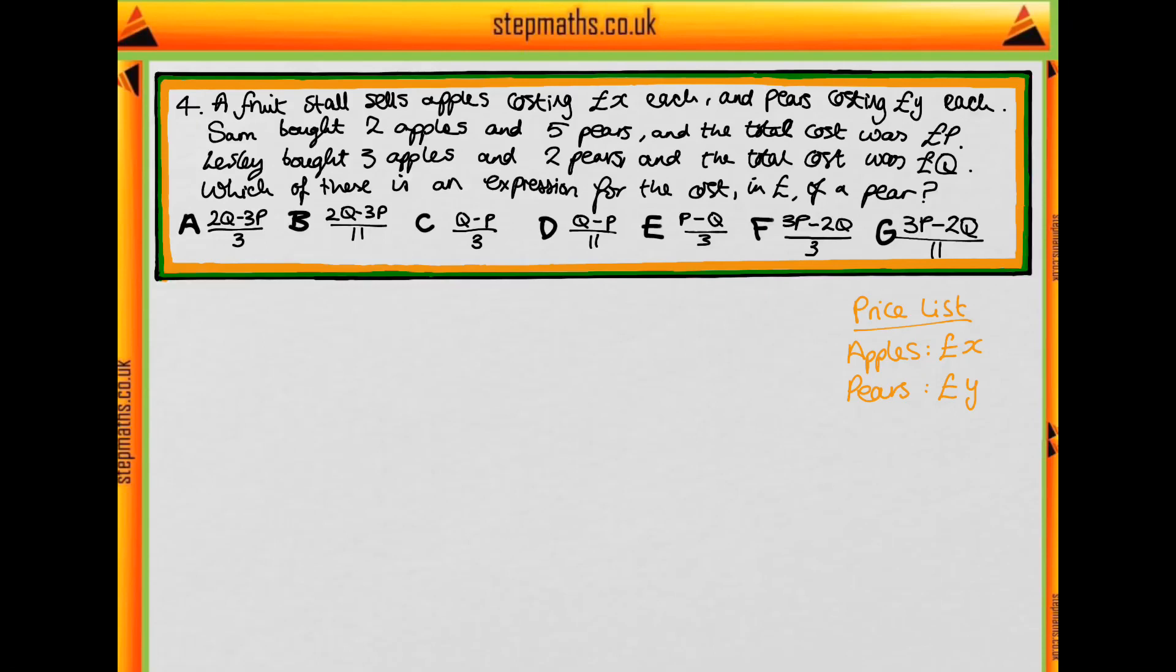So we've got a scenario where we've got two people, Sam and Leslie, buying certain amounts of fruit. They've got apples and pears and we don't know the cost of apples and pears. We've got X pounds for an apple, Y pounds for a pear. And we want to find the cost of a pear.